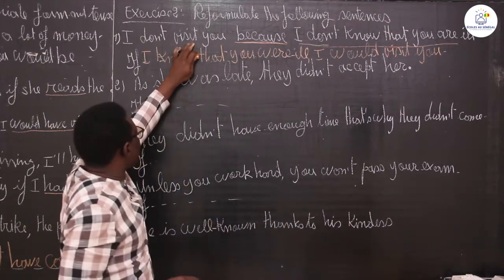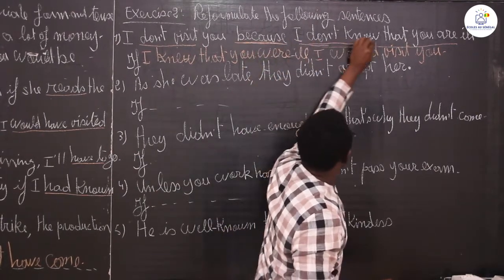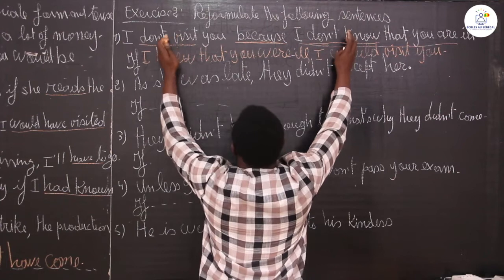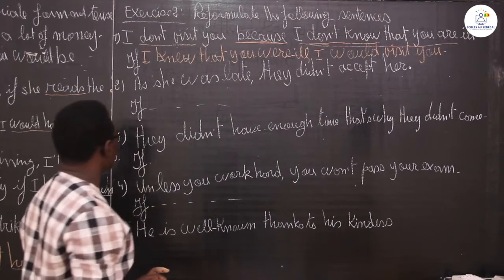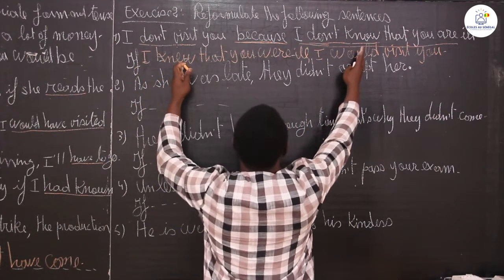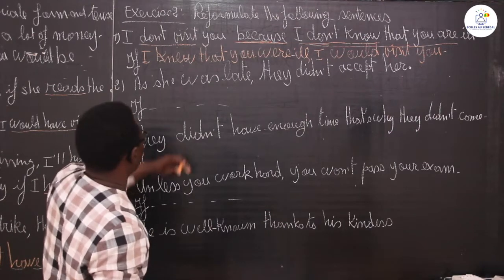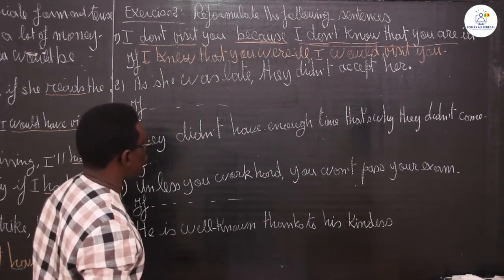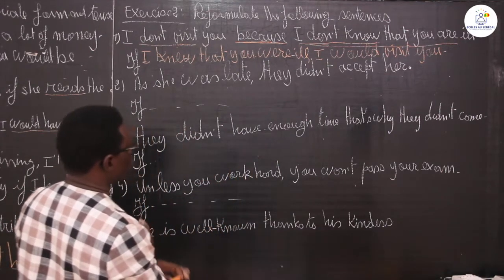The initial sentence is in the present: 'I don't know', 'I don't visit.' Both clauses are in the negative form and in the simple present. So with the if-clause, you have to put the clauses in the affirmative form — they change into the affirmative form. Because the form should change, the tense also should change, and the position of the clause should also change.